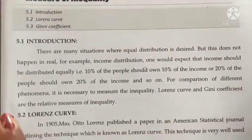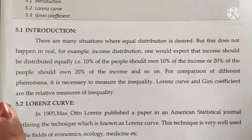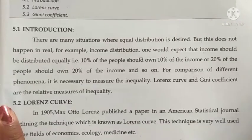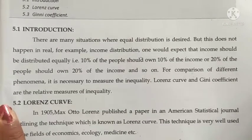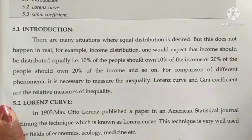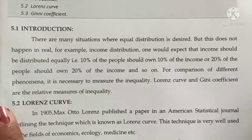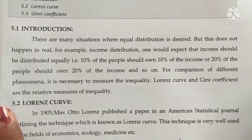First, let us look at the introduction. There are many situations where equal distribution is desired, but this does not happen in reality. For example, in income distribution, one would expect that income should be distributed equally — that is, 10% of the people should own 10% of income, or 20% of the people should own 20% of income, and so on.